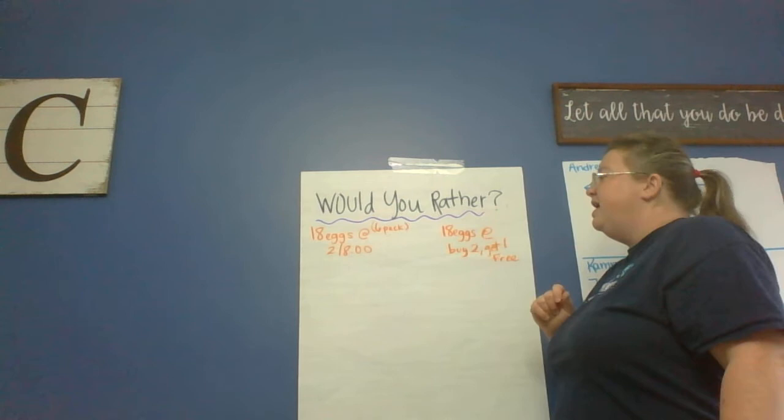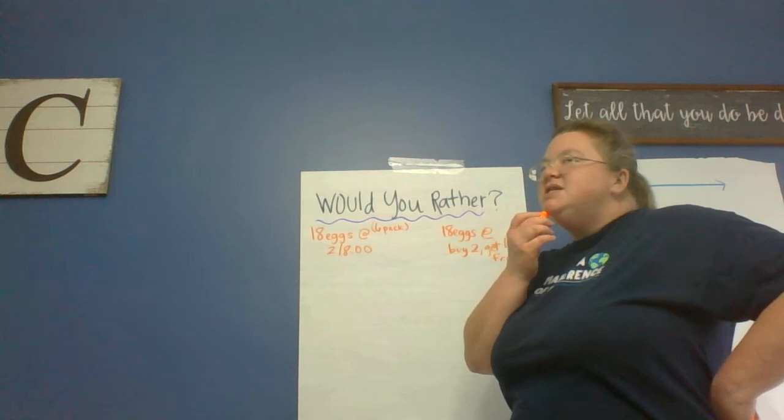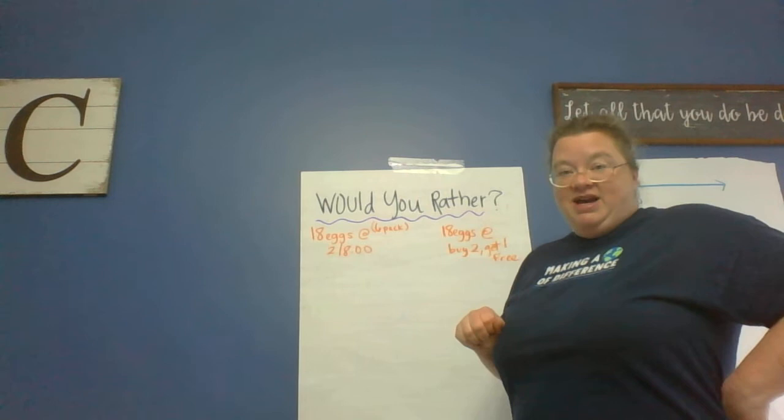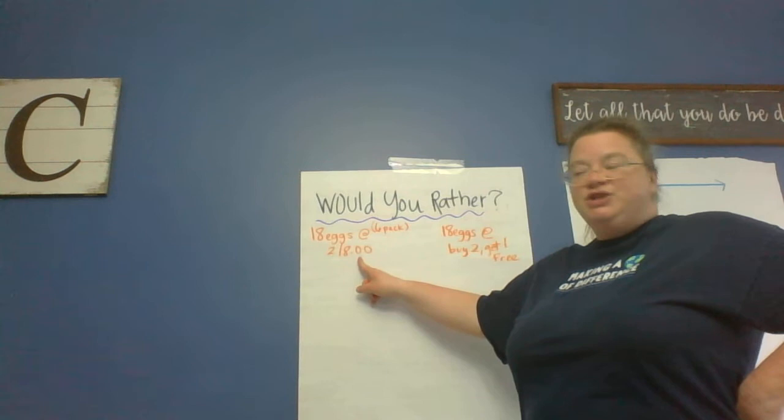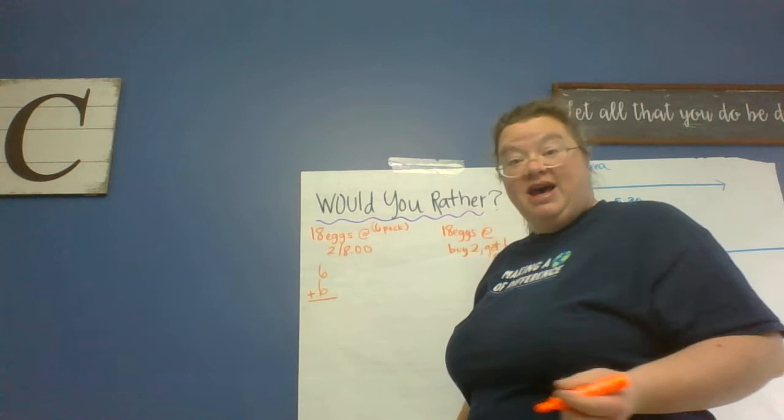Knowing how Miss Cross feels about Reese's and knowing Miss Cross feels about saving money, I'm gonna want to get the most eggs for the least money. Anybody agree with me? Okay, so let's figure out if I were to buy 18 eggs and they cost two packs for eight dollars. So two six-packs for eight dollars. If I get one six-pack and another six-pack, how many eggs is that? It's twelve.